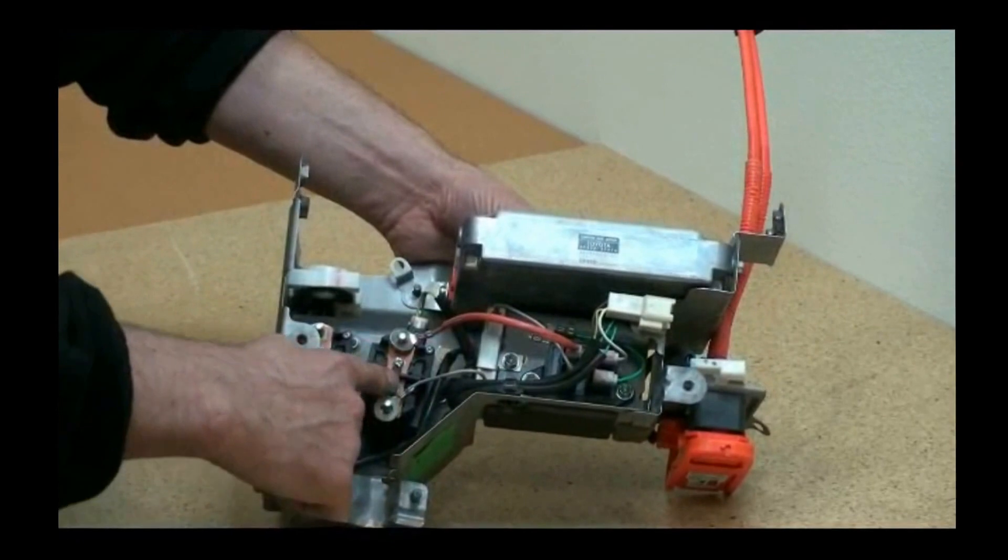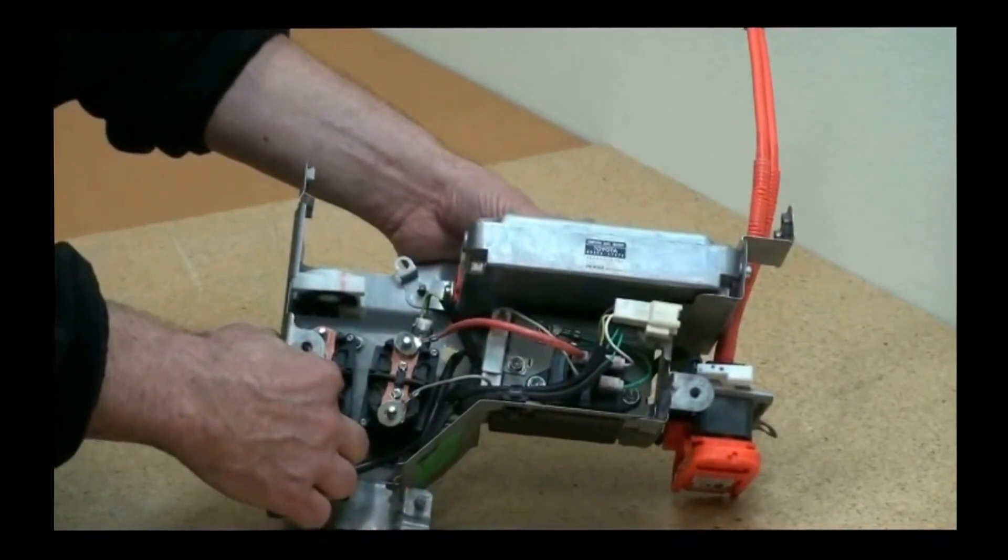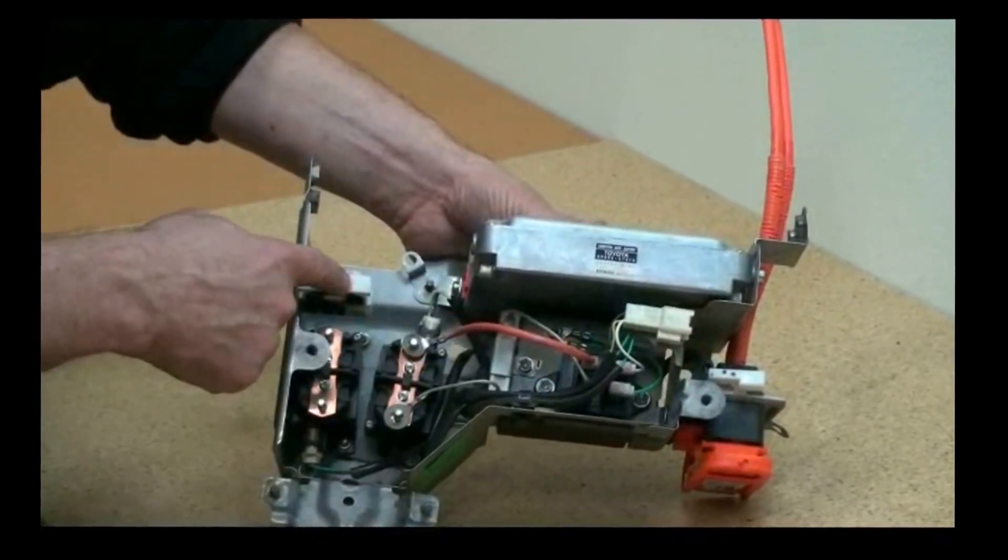We have the positive contactor and the negative contactor. Contactors of course are high current relays. Then we have the current sensor over here.